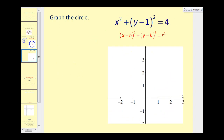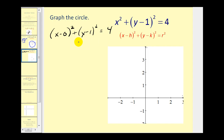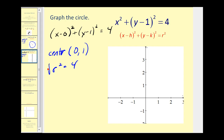Let's go ahead and try one more. Even though this form looks like it doesn't match perfectly, we could rewrite x squared as the quantity (x minus 0) squared, plus the quantity (y minus 1) squared equals four. Now we can determine more easily that the x coordinate of the center would be zero, and the y coordinate of the center would be positive one. The radius squared is equal to four, so if we take the square root of both sides, we have r equals two.